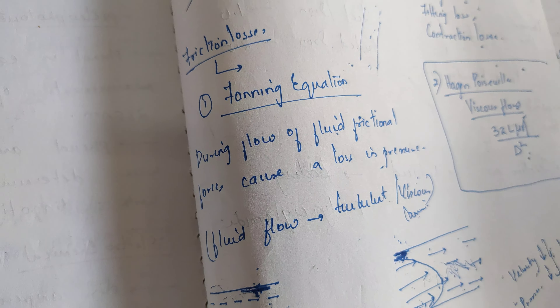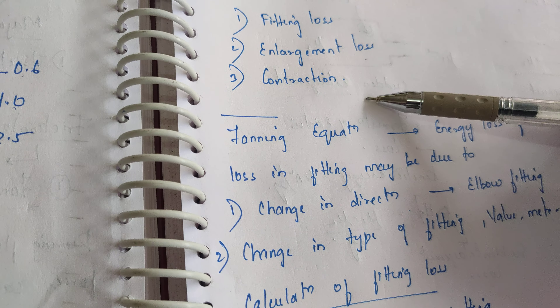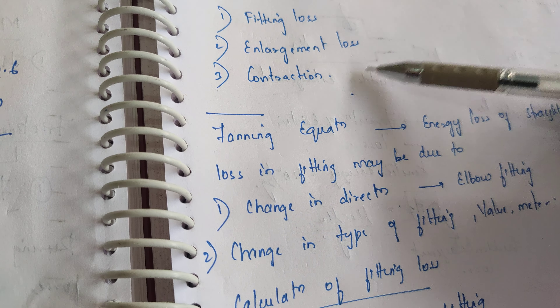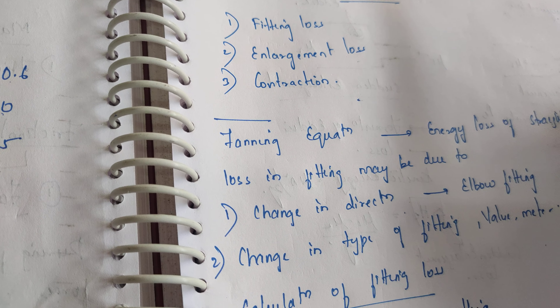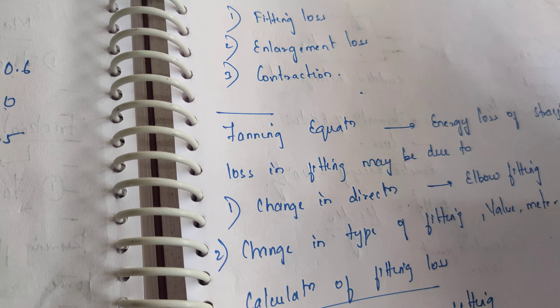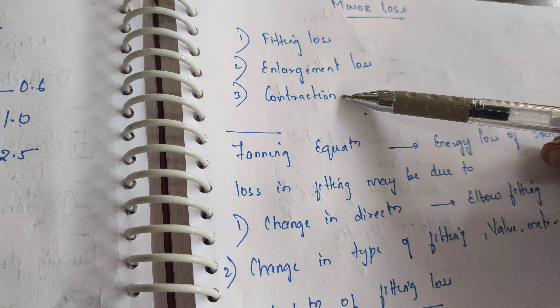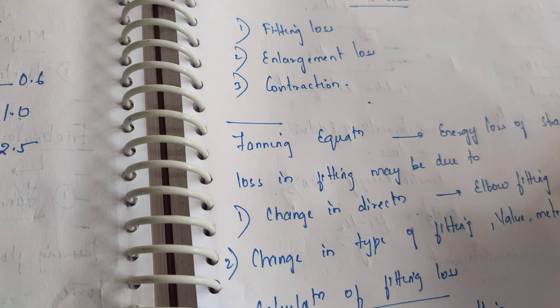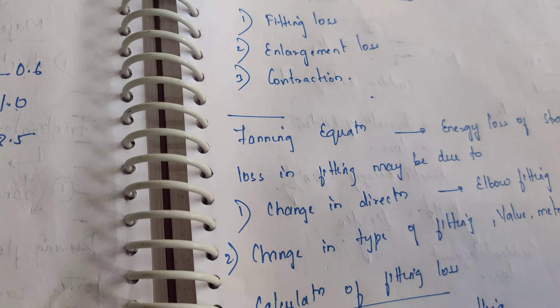Now we will see some minor losses. Minor losses include fitting loss, enlargement loss, and contraction loss. In a pipeline there will be some fittings, some enlargements where the pipe diameter is increased, and some contractions where the pipe diameter is reduced. Due to these attachments and modifications, there will be some losses in the fluid.